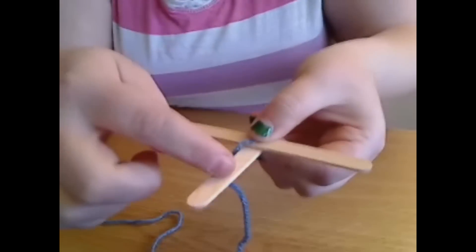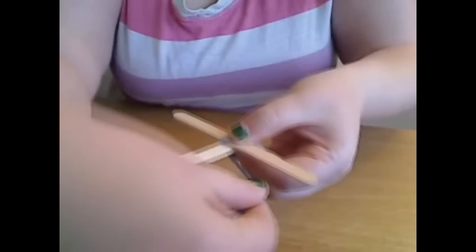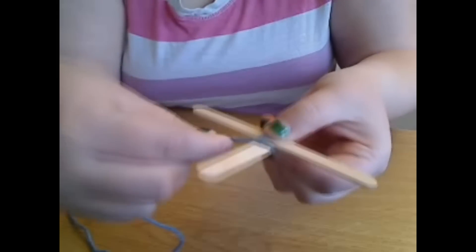To make this god's eye, take the yarn and for each popsicle stick end, go under and then back over, then go to the next one, under and back over.